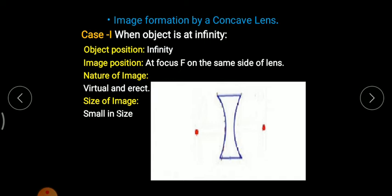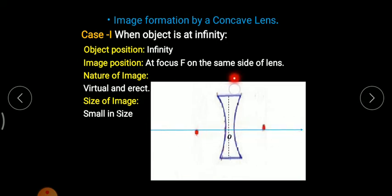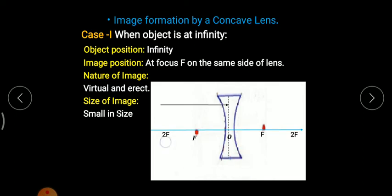In image formation using a concave lens, we have only two cases. In this diagram, the dotted line shows the point from which refraction will occur in the lens. The exact center of the concave lens is the optical center, and the straight line passing through the optical center perpendicular to the lens is the principal axis. This F is for one refracting surface, and that F is for the other; similarly, 2F belongs to each respective refracting surface.